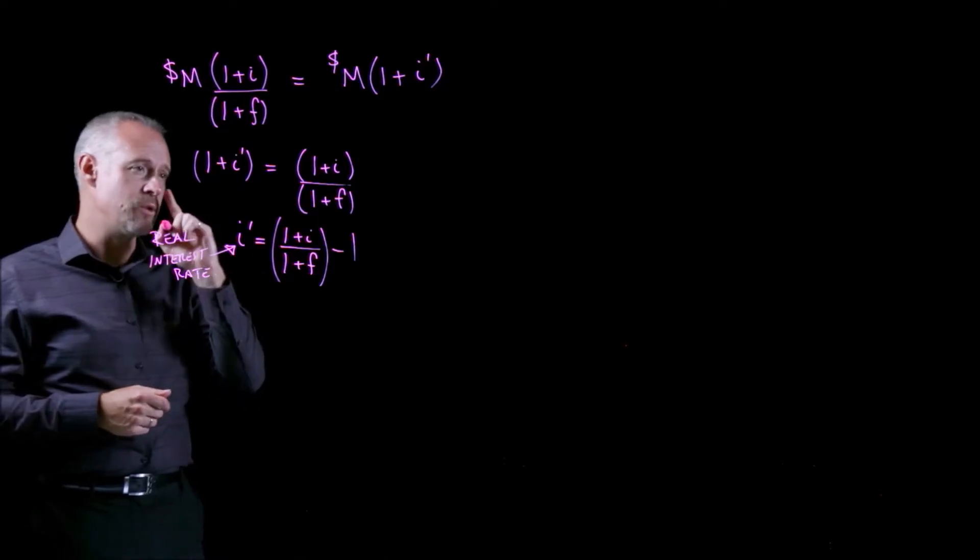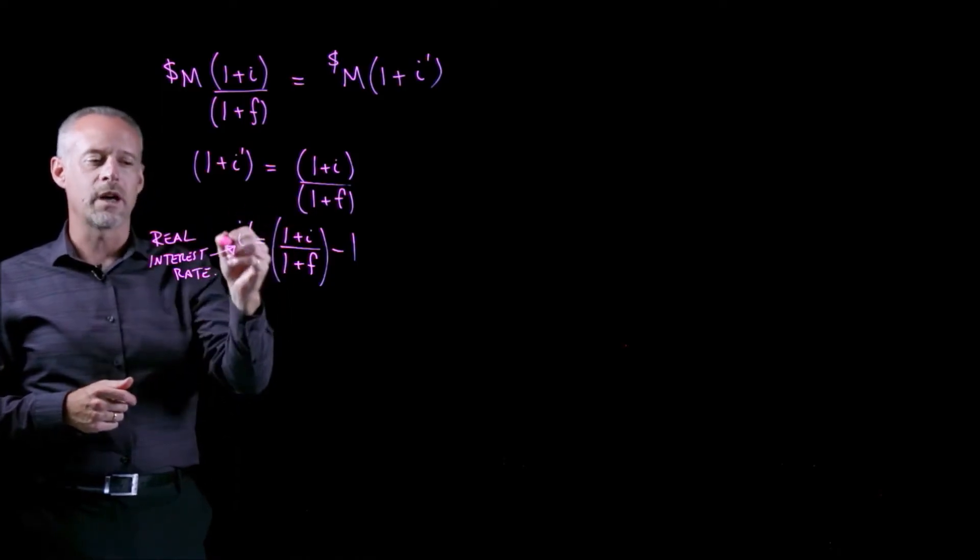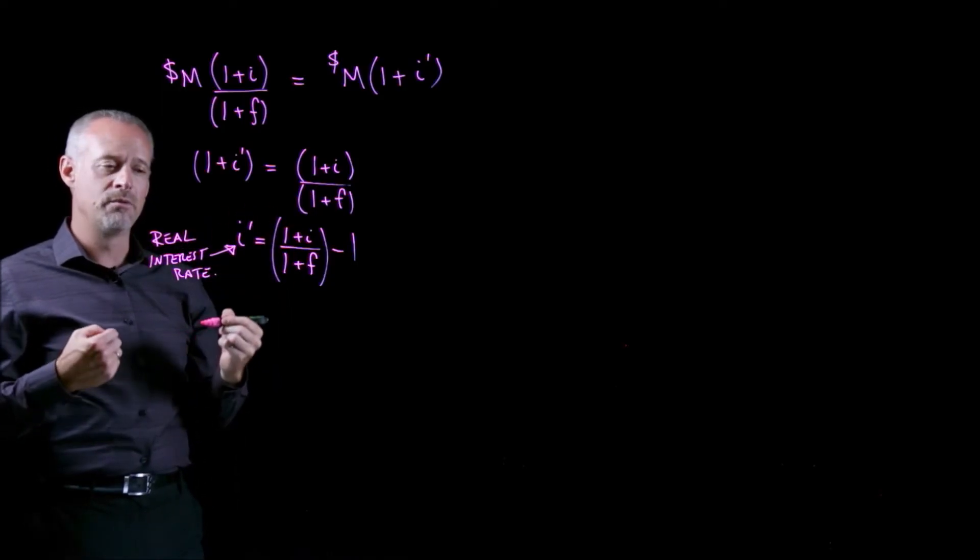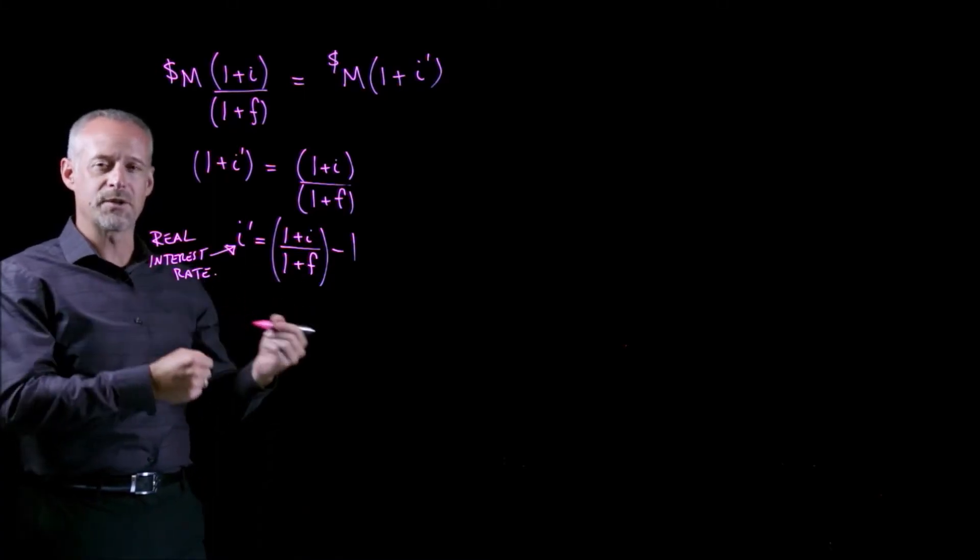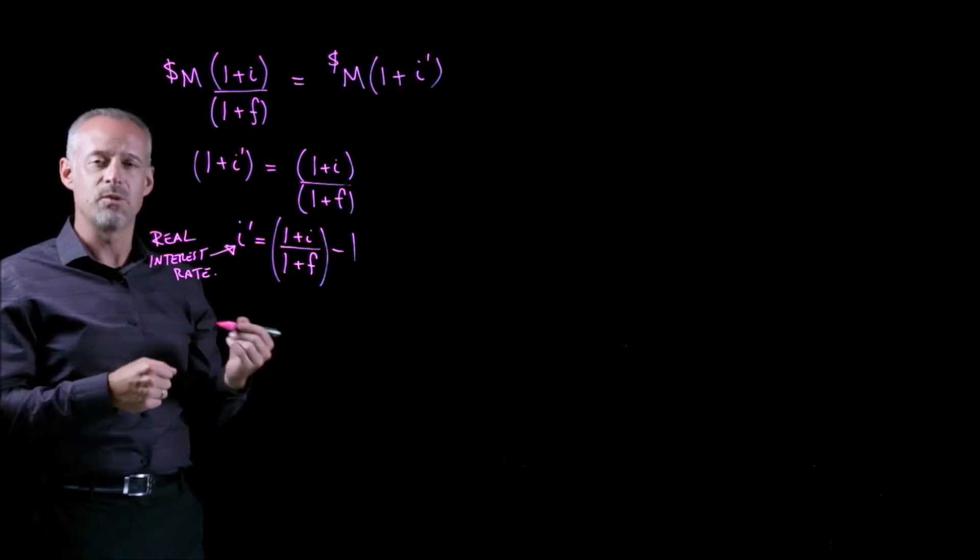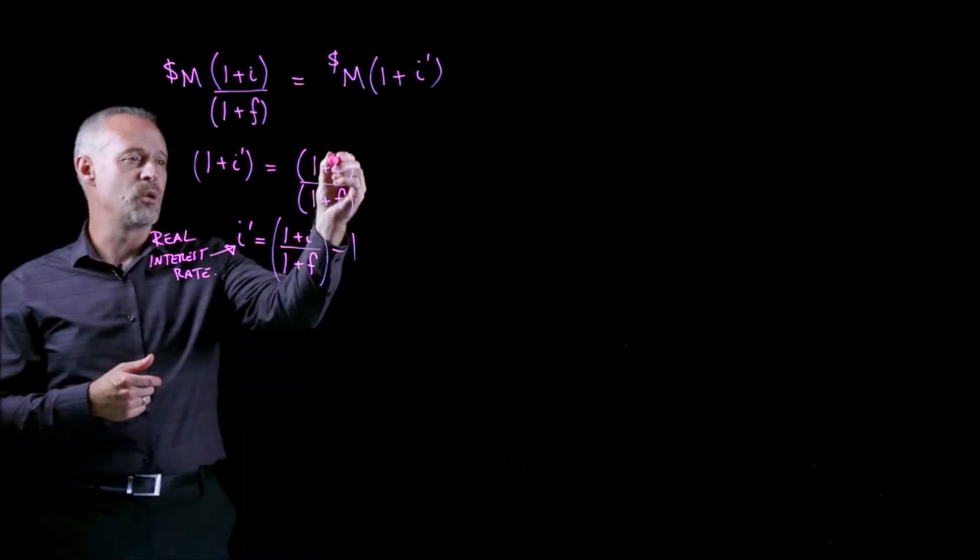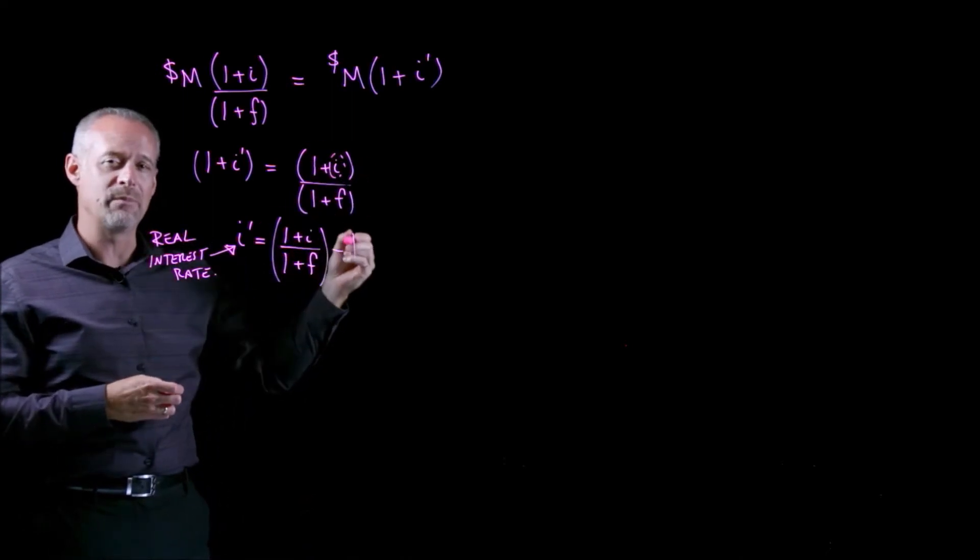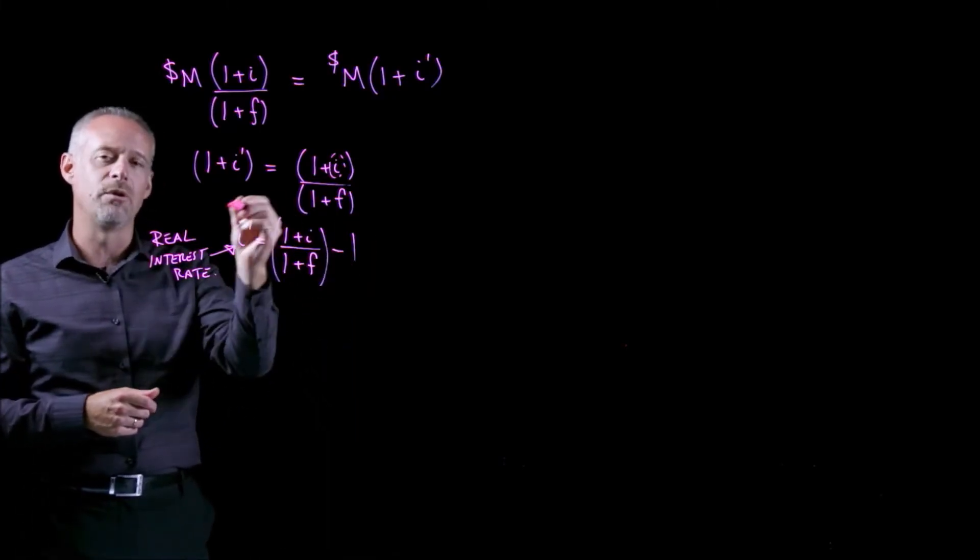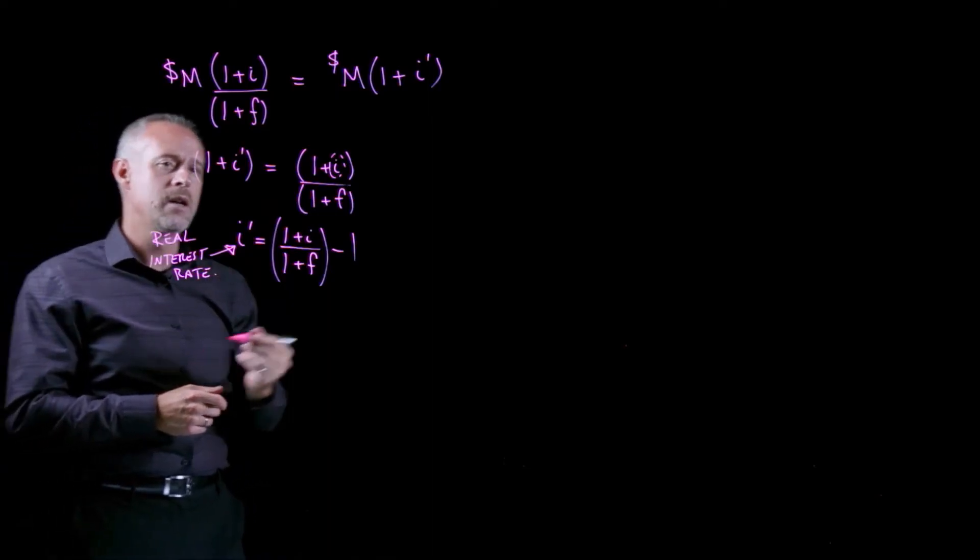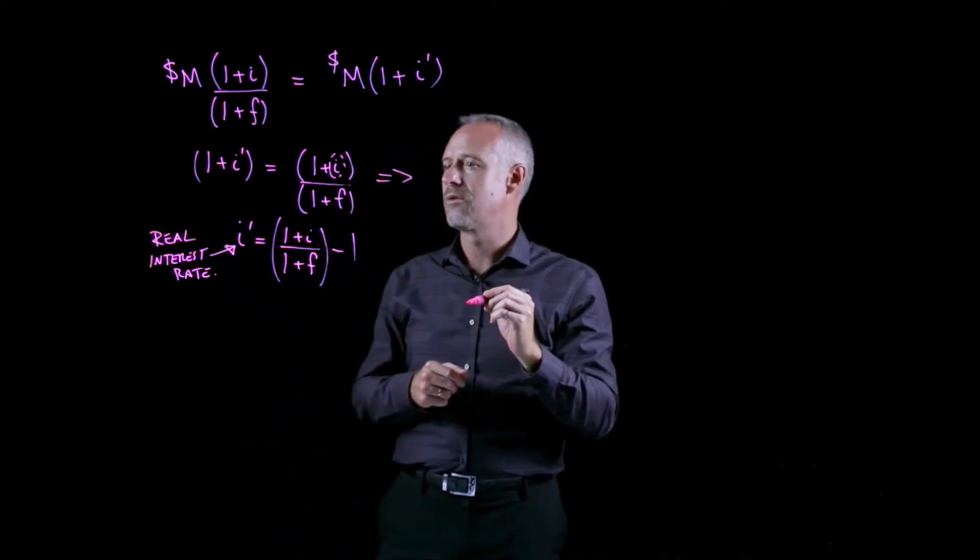Well, it may also be useful for us if we know, say we're given a real interest rate, or a company says, I want to earn interest that really earns me a certain amount, taking into account inflation. Then I may be interested to know, well, what value of I, perhaps as quoted by banks or as we calculated in previous problems, do I need to see in order to get a real rate of return equal to I prime? And if we do this, we could simply rearrange this formula.